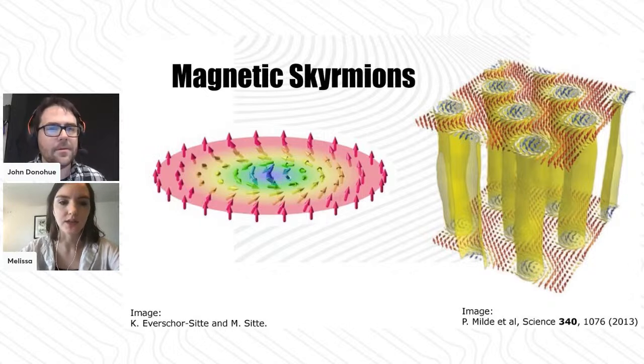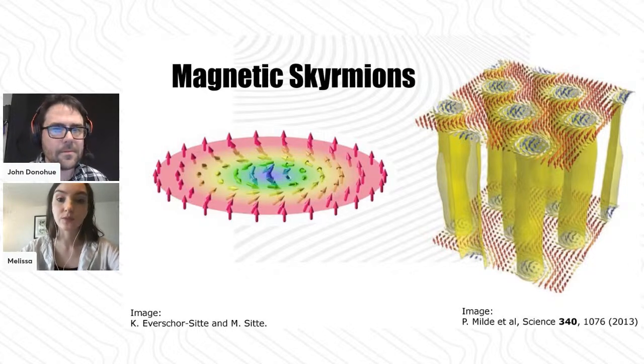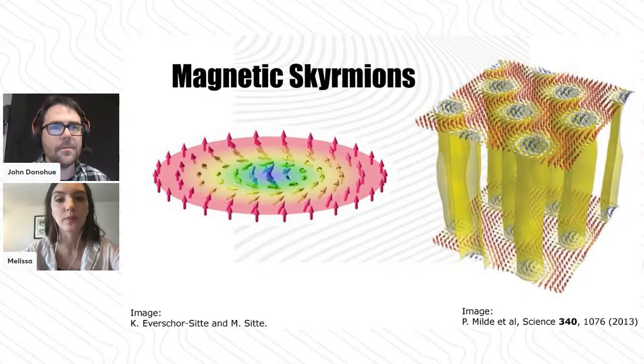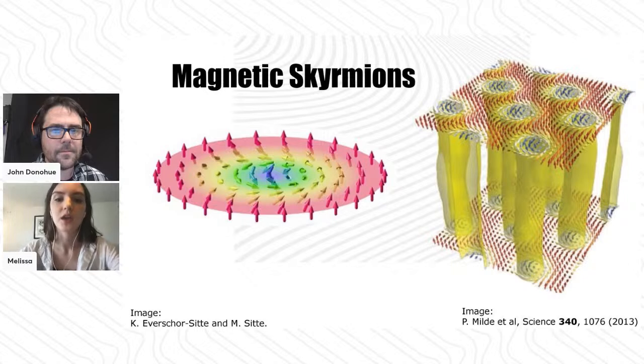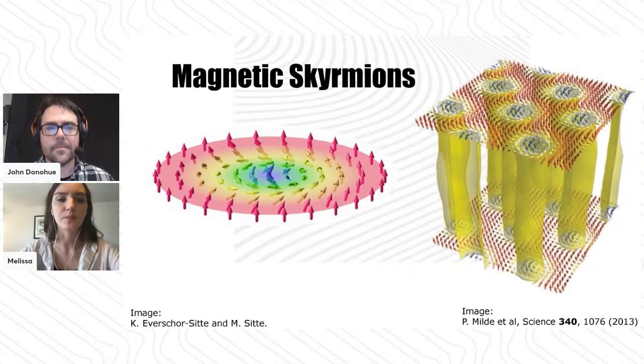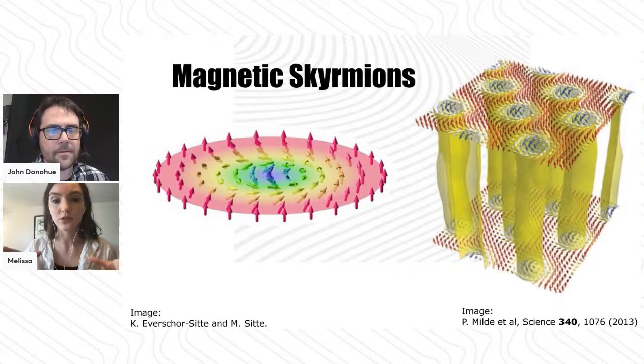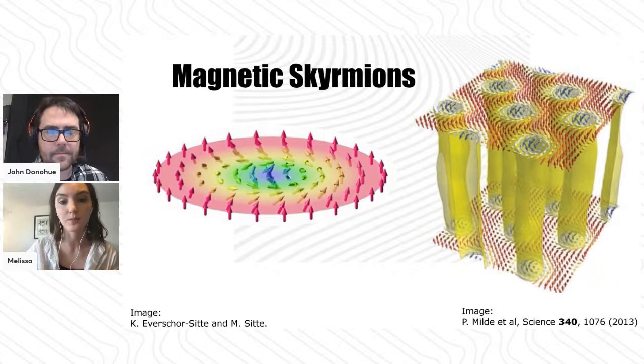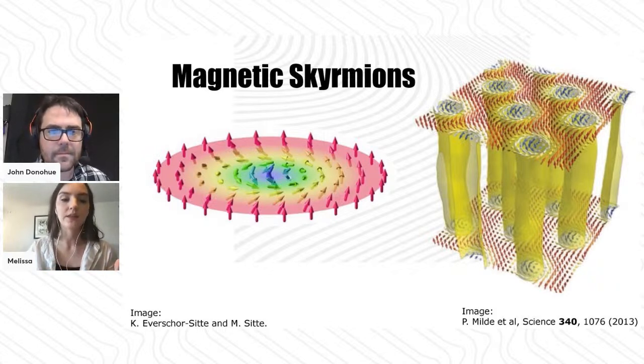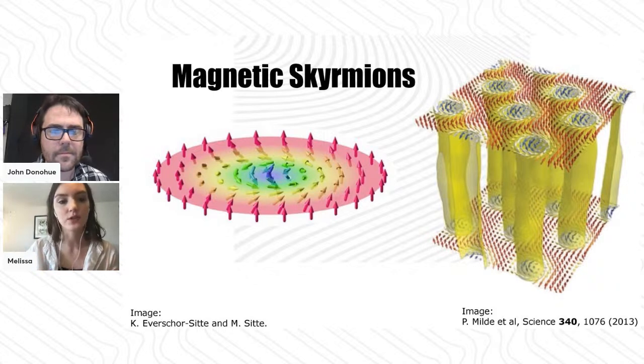When you have this additional degree of freedom - this topology - you can embed your interactions and dynamics in a topological subspace, which can uncover new robust pathways that are less susceptible to noise. Also, skyrmions are nanometric sized, which means we can have these really localized, small, controllable structures that we can use for high-density magnetic memory applications.